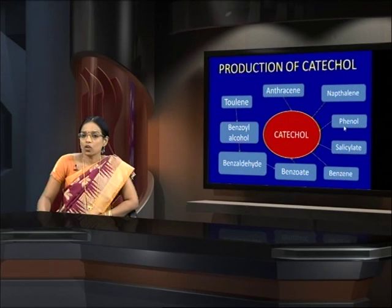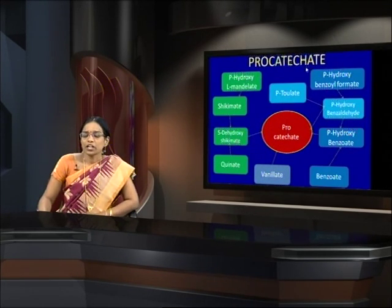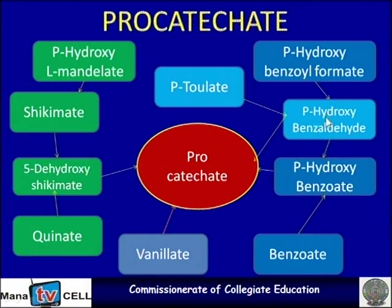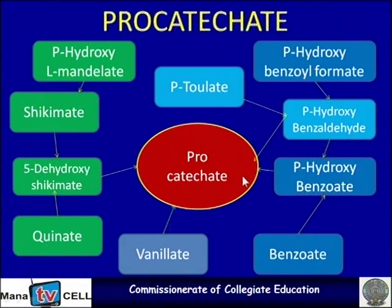Naphthalene, phenol, salicylate, and benzene are all converted into catechol. For procatechate, p-hydroxy L-mandelate is first converted to shikimate and then to 3-dehydroxy shikimate. Quinate is also converted to 3-dehydroxy shikimate and then to procatechate. Similarly, p-toluate to p-hydroxy benzaldehyde and then to procatechate, or p-hydroxy benzoate is converted to p-hydroxy benzaldehyde, then to benzaldehyde, and then to procatechate.